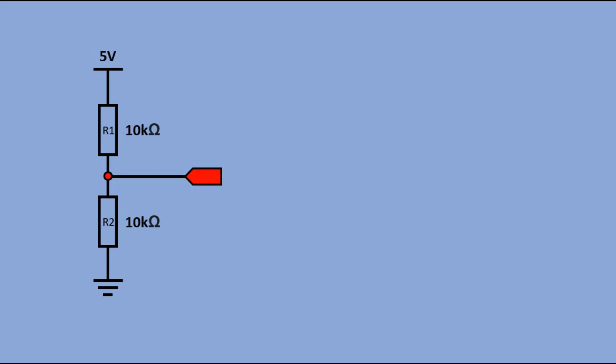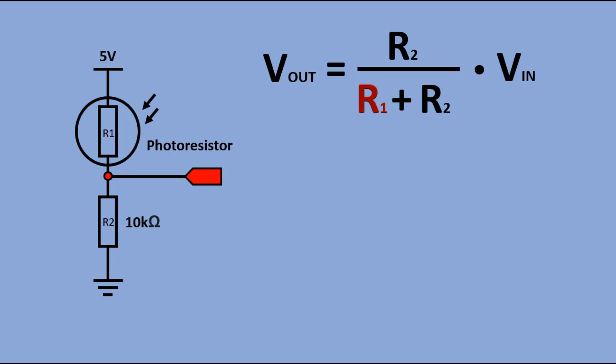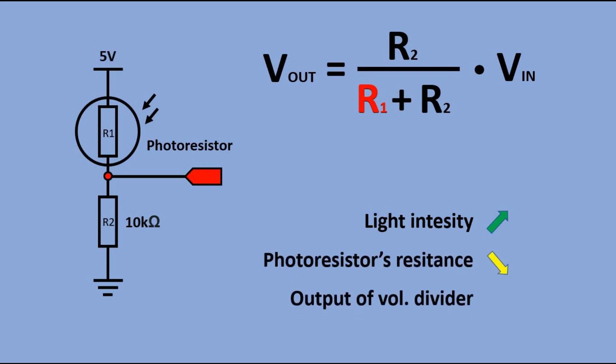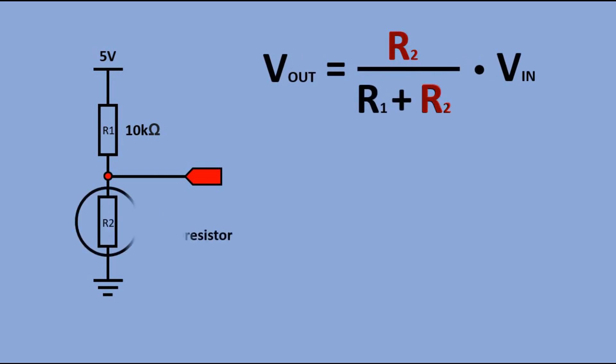So what's going to happen if we replace the resistor in the upper leg of the voltage divider with a photoresistor? Now, with light intensity increasing, the resistance of the LDR would decrease and the output of the voltage divider would increase. We also have an option of placing the LDR in the lower leg of the voltage divider. In this case, with light intensity increasing, the output voltage would decrease.